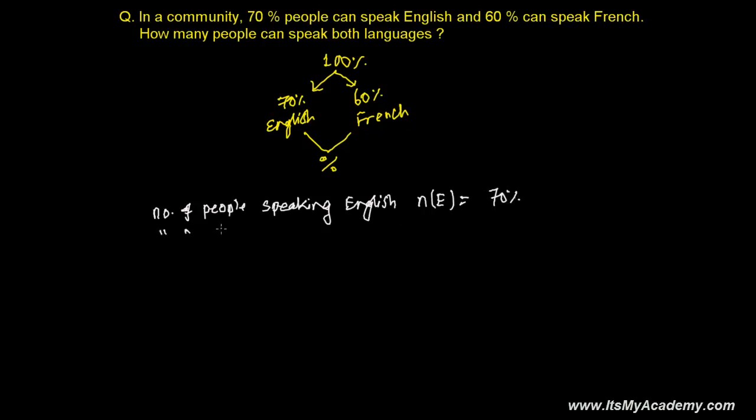Similarly, number of people speaking French, I'm representing that by F, is how much? 60%. And now, number of people speaking both languages, let me suppose this is N(E intersection F), is how much? That question is asking us.